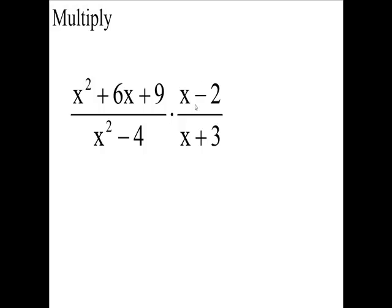We're going to multiply two fractions. The left fraction has a numerator of x² + 6x + 9 and the denominator of x² - 4, times the other fraction which has the numerator x - 2 and the denominator x + 3. Now notice this numerator is a perfect square trinomial.